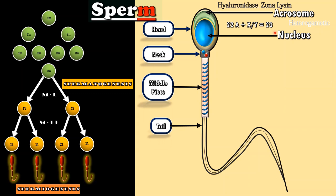Head is followed by neck which shows proximal and distal centrioles. Distal centrioles form axial filament. The ovum lacks centrioles so it is provided by sperm.